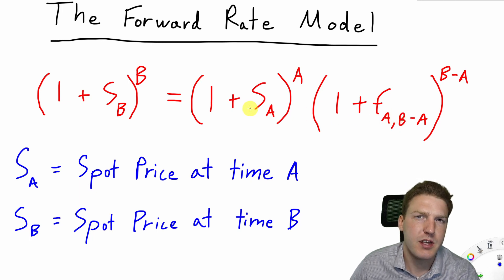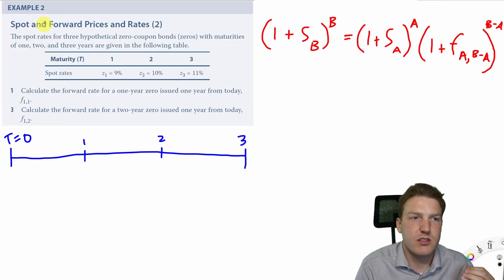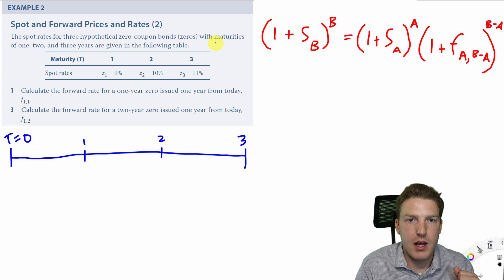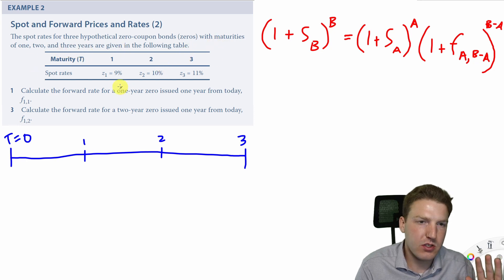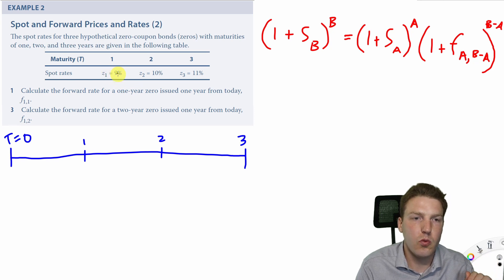Let's work a blue box example in the book to really nail home this idea. Example 2 tells us that the spot rates for 3 hypothetical 0 coupon bonds with maturities of 1, 2, and 3 years are given in the following table.